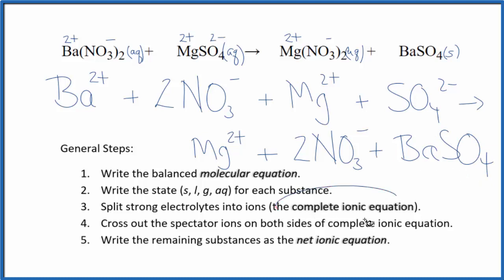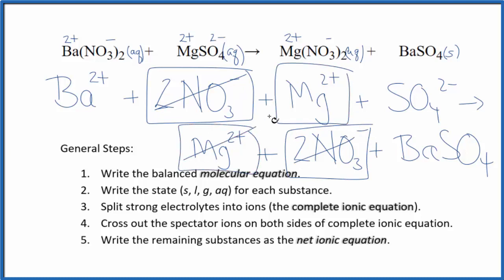So this is the complete ionic equation. Now we'll cross out those spectator ions. They're on both sides. They haven't changed, so we're really not interested in them. Reactants and products, here we have two nitrate ions in the reactants and in the products. Get rid of that. The magnesium ion, again here in the products, get rid of that.